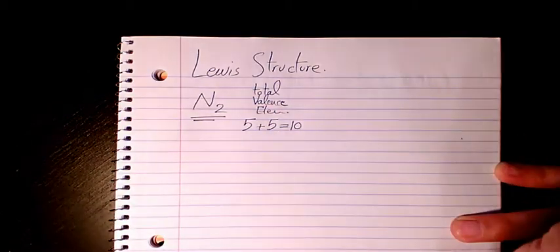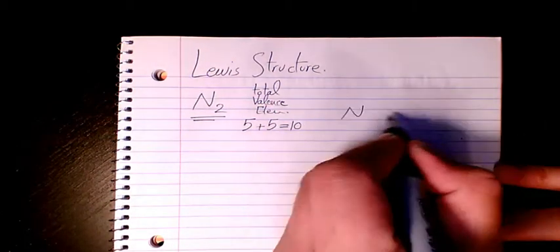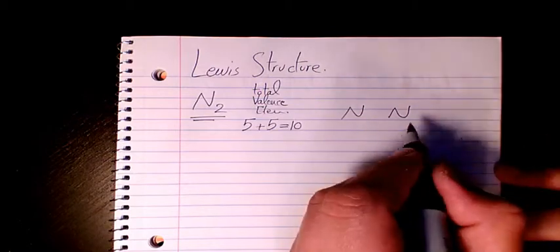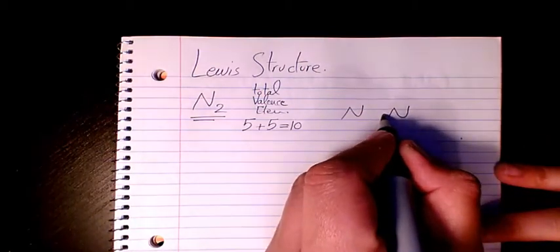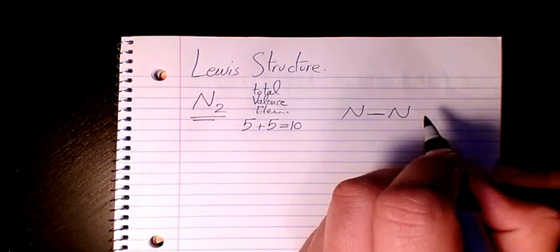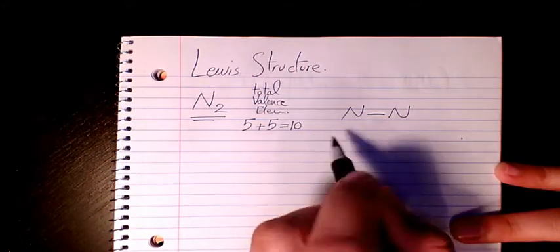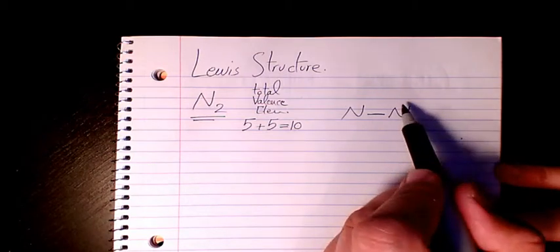So then we have N and N. We draw a single bond here, so it means that we need 8 more electrons.